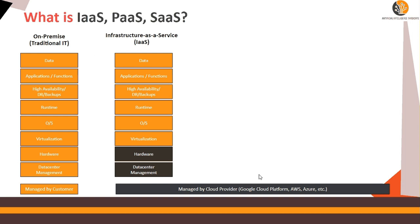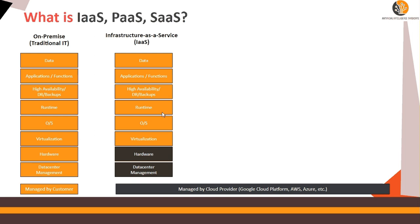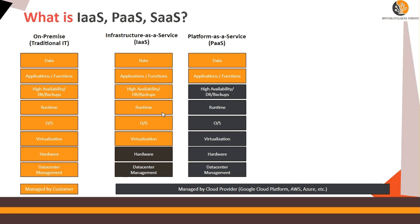For infrastructure as a service, you offload hardware and data center management to the cloud provider, and from there on you take care of OS, runtime, backups, applications, and functions. Essentially, IaaS gives you the bare metal infrastructure. Platform as a service gives you an option of offloading even more — like virtualization, OS, runtime, and high availability.